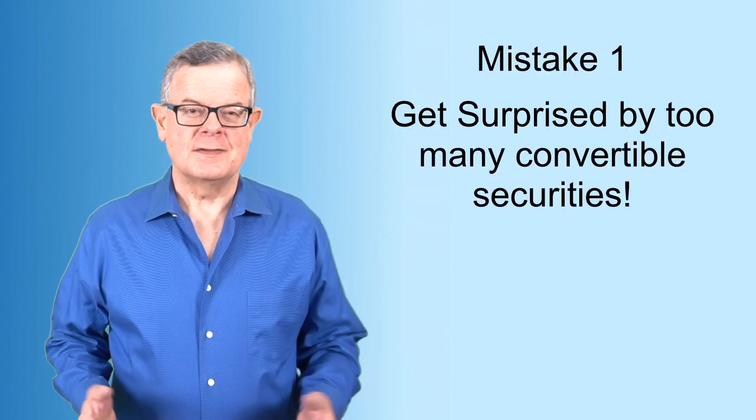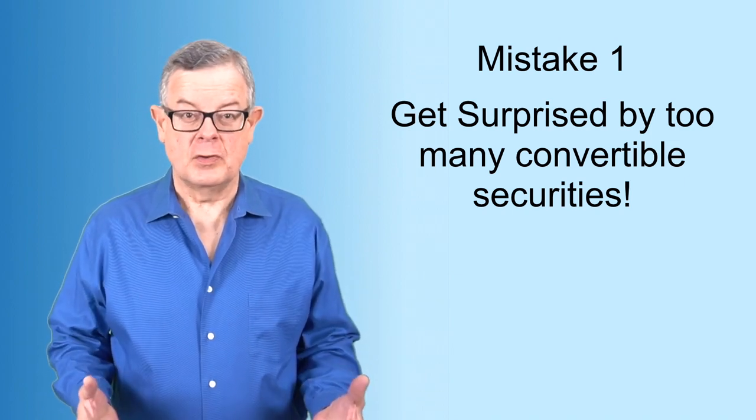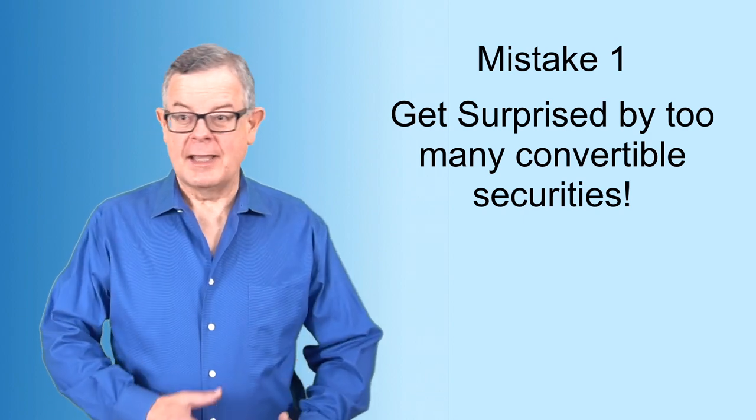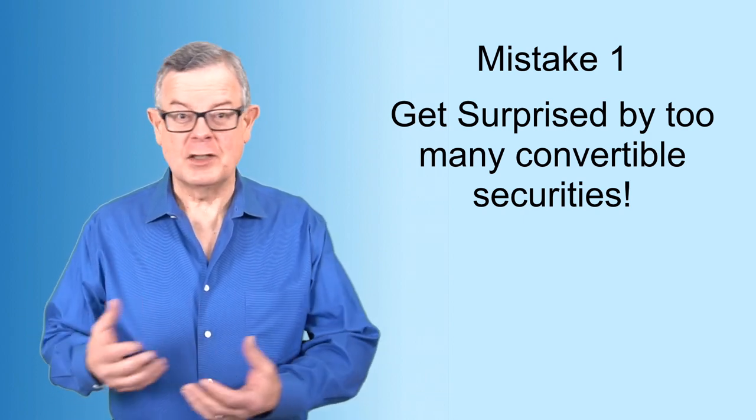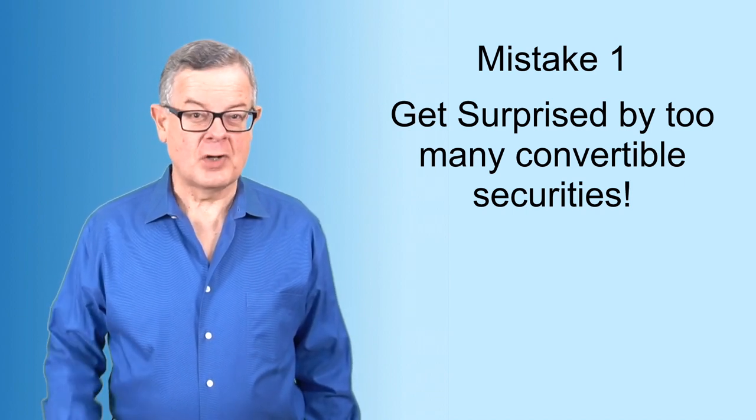Mistake number one is getting surprised by how many convertible securities you've got, whether those are notes or safes and how much dilution that's going to cause you when it converts in a priced round. What can you do to avoid that problem?